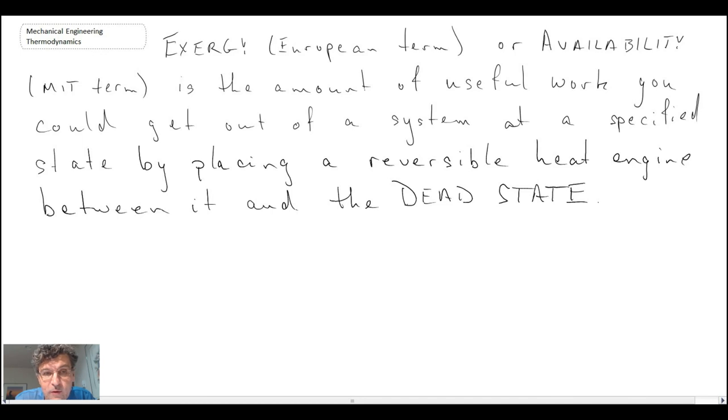And we will always have the actual work or the useful work coming out as being less than the reversible work. But what it does is it shows us if we could improve our system. And usually we can't improve it, but it will identify ways that we could improve our system. And that will come out as we do exergy analysis.